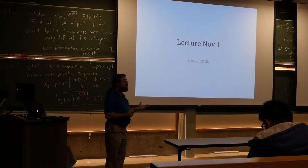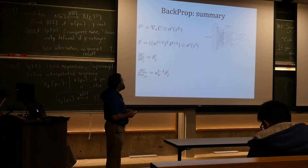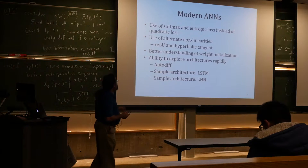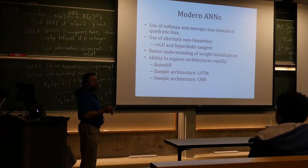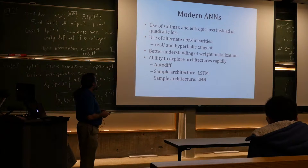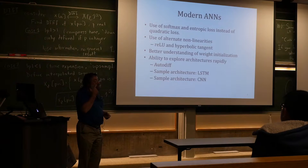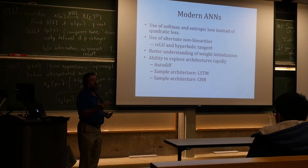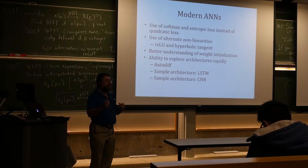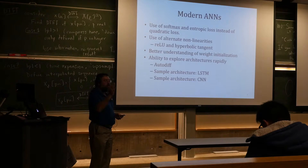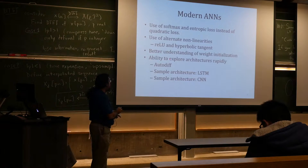We started out talking about backprop, and then I talked about the tools that you need to explore different neural architectures quickly. The main one is basically auto-differentiation. This is a platform that lets you just define your model, and then you do the derivative automatically. It also lets you reuse a lot of code, so you can have a single gradient descent algorithm that uses momentum and other tricks, and you can use that on many different architectures.